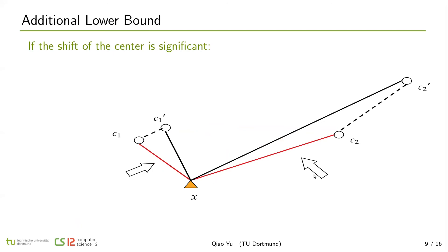We also provide a new lower bound which is effective if the shift of the center is significant. The lower bound of Elkan might be inefficient. For example, in this case, the shift of c2 to c2' is very large. Lower bound of Elkan is to use x c2 minus c2 c2', and this value might be very small and negative.